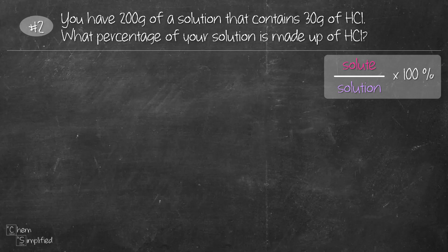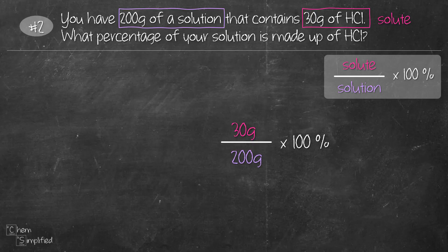Moving on to the second question, you'll notice that we're given 200 grams of solution and 30 grams of HCl. What do you think is the solute here? Yeah, it's the HCl. So we'll place the solute on top which is the 30 grams of HCl divided by the solution which is 200 grams times 100 percent and that works out to be 15 percent. Since it's mass over mass, that 15 percent is the percent mass which is abbreviated as percent m over m. Are you feeling good about this?